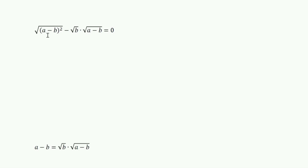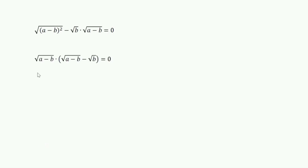We can write a minus b equals square root of (a minus b) whole squared. So, square root of (a minus b) whole squared minus square root of b into square root of (a minus b) equals 0. Now we can factorize with square root of (a minus b), so we get square root of (a minus b) into square root of (a minus b) minus square root of b equals 0.